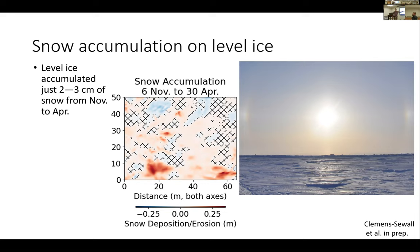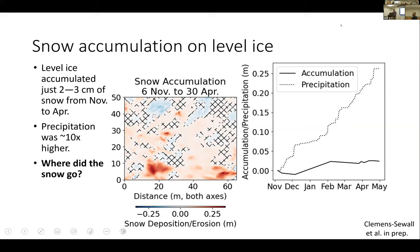This photo on the right is actually the piece of ice in question — I was actually taking a photo of the sun dogs, not so much the ice, but this is the environment we're talking about. Over this whole winter time period, this region of level ice accumulated about 2 to 3 centimeters of snow — this particular region about 3 centimeters, others around 2 centimeters. And that's not because it didn't snow here. This plot on the right shows the accumulation in the solid dark line for this level ice, and the precipitation from a vertically pointing K-band radar in the dotted line.